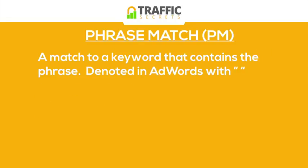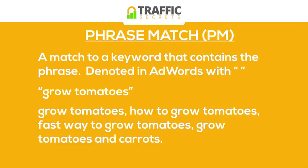For a phrase match, it's a match to a keyword that contains a phrase. So it's similar to the exact match, but there can be other words related to it, as long as it still contains the phrase somewhere in the keyword phrase. It's denoted in AdWords with quotes. So you would type "grow tomatoes" and what could potentially trigger the ad would be: grow tomatoes, how to grow tomatoes, fast way to grow tomatoes, grow tomatoes and carrots — thousands of variations.